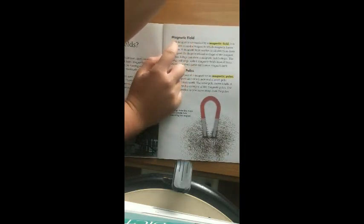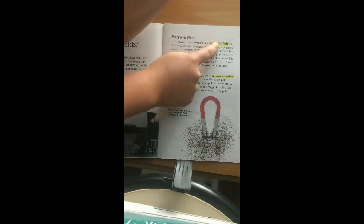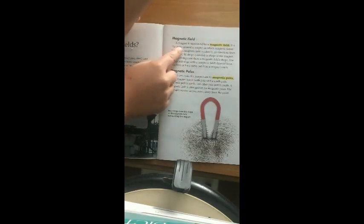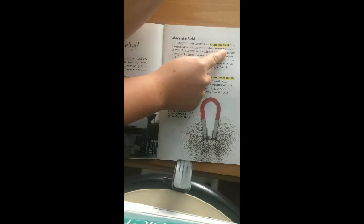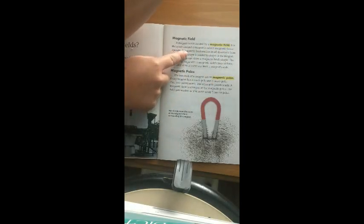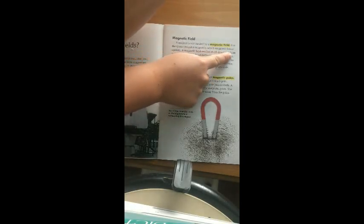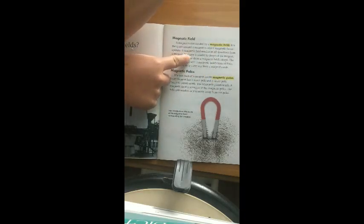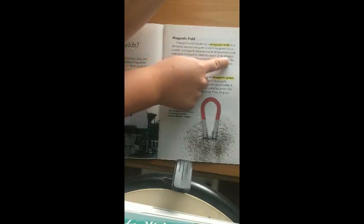Magnetic Field. A magnet is surrounded by a magnetic field. It is the space around a magnet in which magnetic forces operate. A magnetic field reaches in all directions from a magnet. Its shape is related to the shape of the magnet.